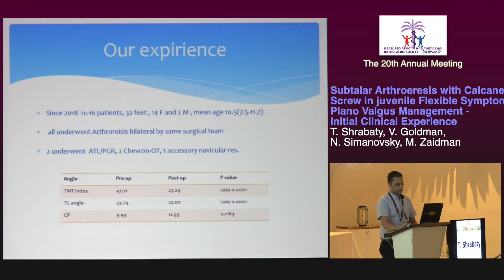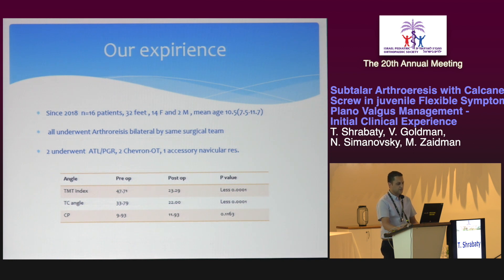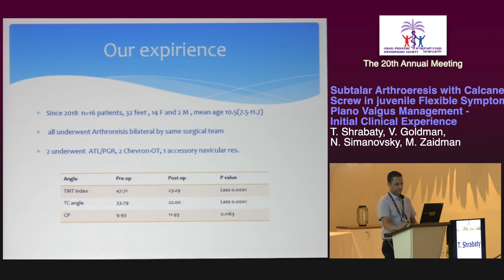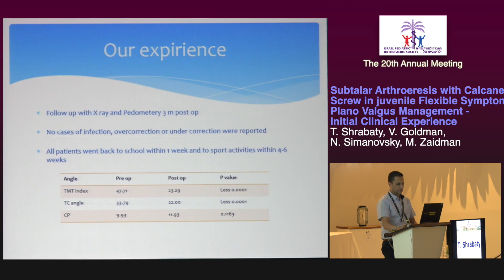Starting in 2019, we operated on 16 patients, 32 feet — 14 females and 2 males — with a mean age of 10.5. All patients underwent bilateral arthroereisis by the same surgical team. Two patients underwent additional lengthening of the gastrocnemius-soleus complex as a proximal gastrocnemius release. Two patients with additional deformity underwent chevron osteotomy, and one patient underwent resection of an accessory navicular bone. Follow-up was performed by X-rays and podometric examinations at three months post-operative and once yearly.